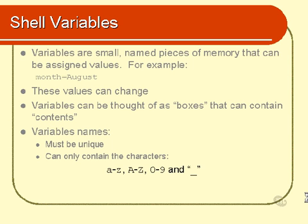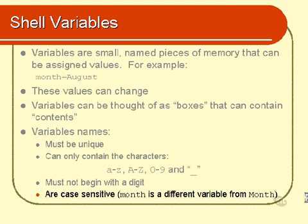As far as the contents are concerned, that's a completely different story — you can put just about anything into the box. But the label on the front must be made of just those permitted characters. Furthermore, the name must not begin with a digit; it can begin with a letter or the underscore. Also, these names are case-sensitive. If you create a variable called month in all lowercase and then create a separate variable with a capital M for month, you have actually created two different variables.